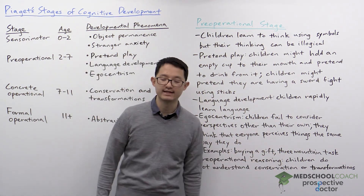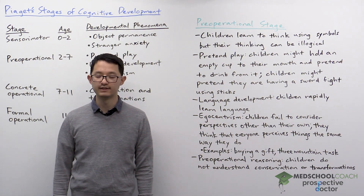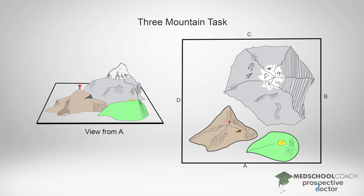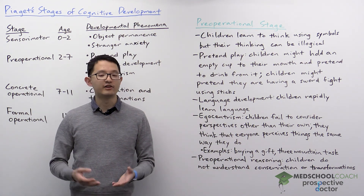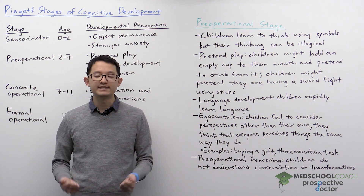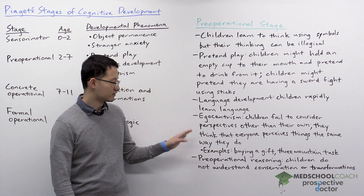Another example is the three mountain task, one of the famous experiments that Piaget developed. On this diagram, you can see how it works. The child is placed in front of a setup with three mountains and can stand at different positions around the table. The child is asked what someone else would see if they were standing at a different position — for example, on the opposite side. Egocentric children will always say that other people, regardless of where they're standing, see the same thing the child sees.